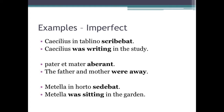Now let's have a look at some examples of the imperfect tense in use. 'Caecilius in tablino scribebat' — this means 'Caecilius was writing in the study.' 'Pater et mater aberant' — this means 'the father and mother were away.' And finally, 'Metella in horto sedebat' — this means 'Metella was sitting in the garden.'